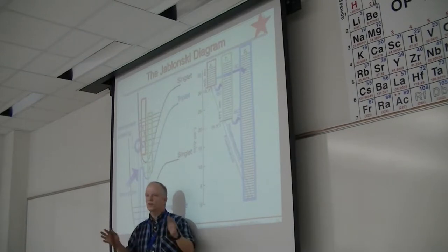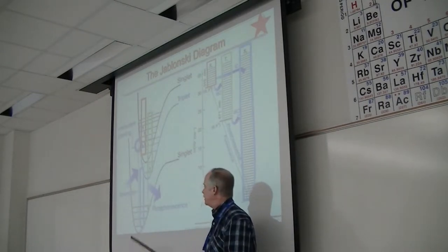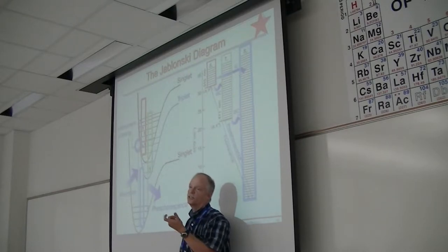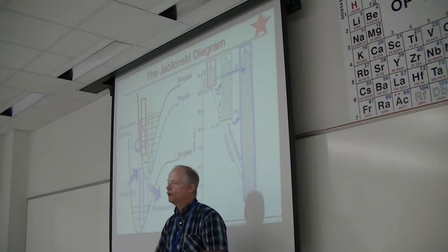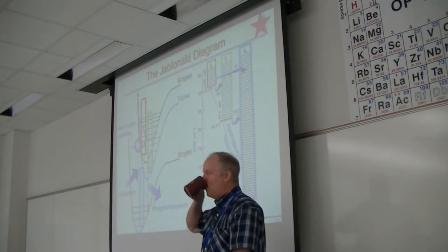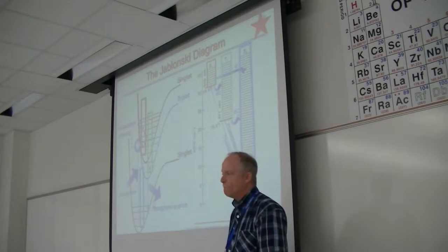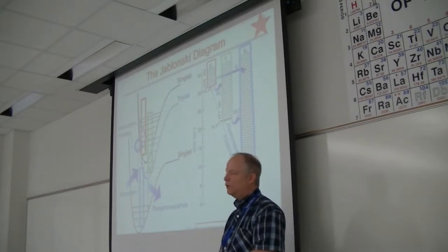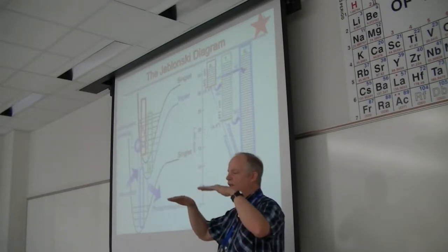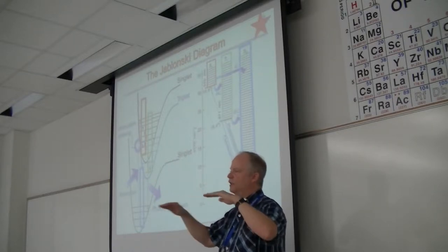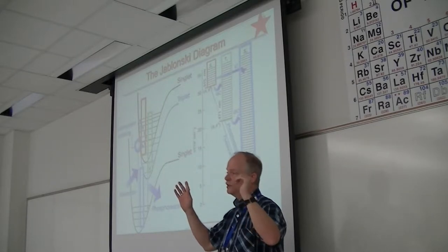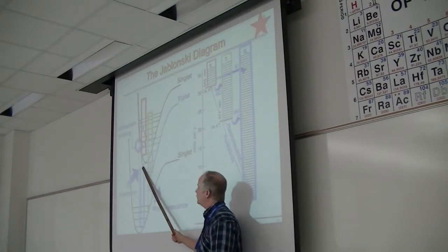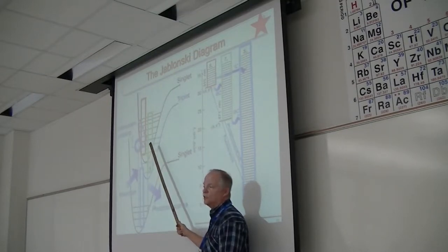These transitions look diagonal in the Jablonski diagram, but that doesn't imply anything about bond length changes in the molecule. All radiative transitions in the potential energy surface diagrams are vertical transitions because the x-axis is the internuclear distance and there's no time for the nuclei to move. The excited state is still a quantized system — the molecule is in specific vibrational and rotational levels as it relaxes down through the singlet excited state.